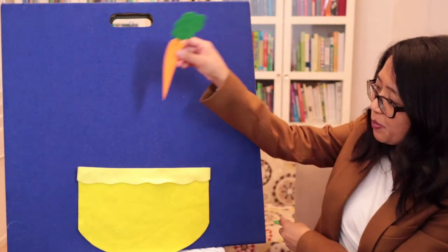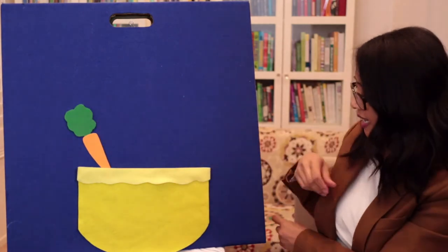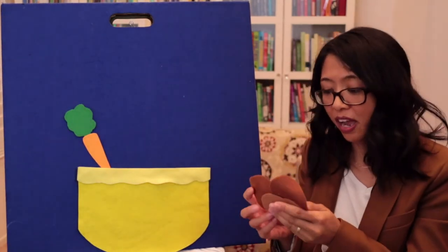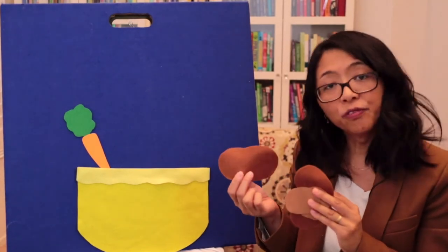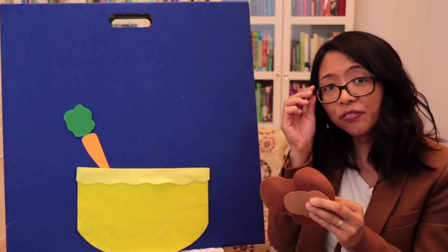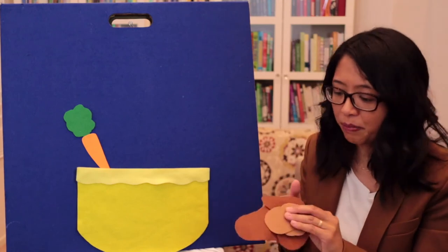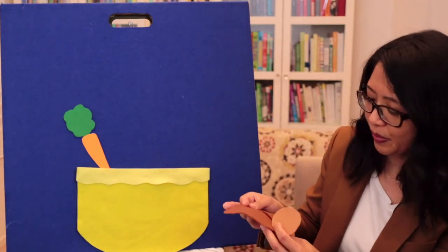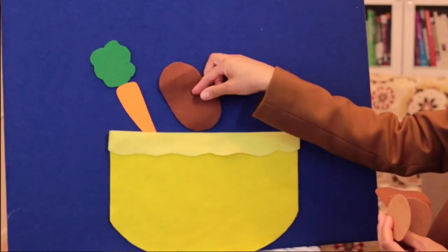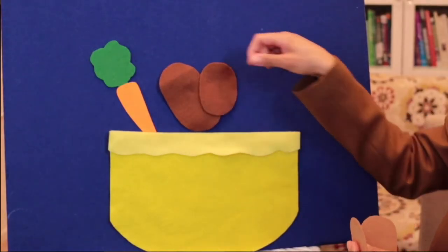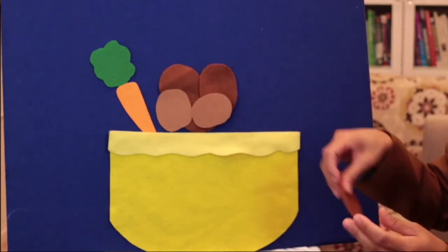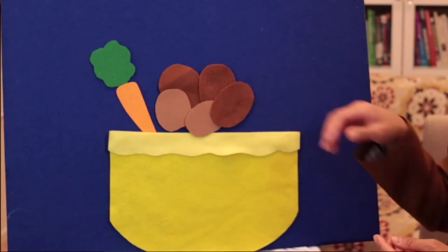So in your soup, you could have carrot. And I use some brown felt pieces. And again, if you don't have felt, you could use construction paper, brown paper. And I made these potatoes. Here's one, two, three, four, five potatoes to go into my soup.